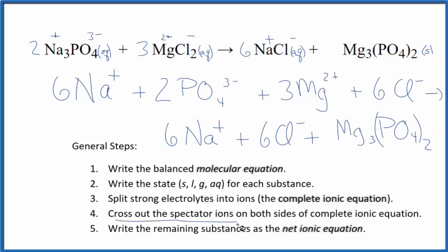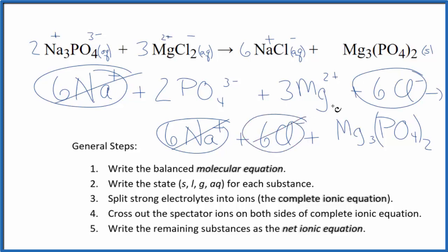Now we can cross the spectator ions out on both sides. So let's see. Reactants here. Products here. 6 sodium ions in the reactants and products. Let's get rid of those. See 6 chlorides here. And then in the products. Get rid of those. And what's left, that's the net ionic equation for Na3PO4 plus MgCl2. I'll clean this up and write the states in. We'll have our net ionic equation.